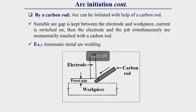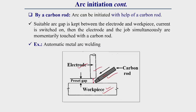Another technique uses a carbon rod. A suitable arc gap is maintained between electrode and workpiece, then the welding current is switched on. The electrode and workpiece are then momentarily touched with the carbon rod, which provides a conducting path, establishing an arc in the gap. This is used in automatic metal arc welding and some TIG welding techniques.